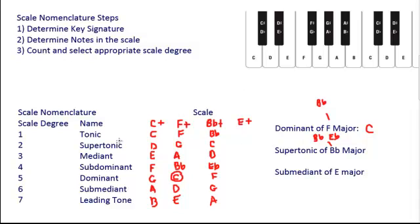So then we count down. Supertonic's the second, so the second note of the B flat major scale is a C. So the supertonic of B flat major is a C.